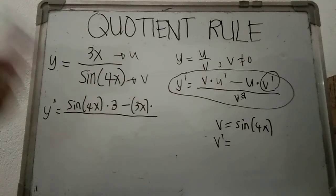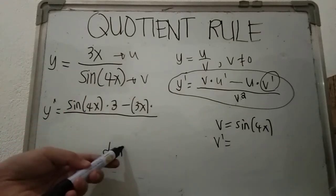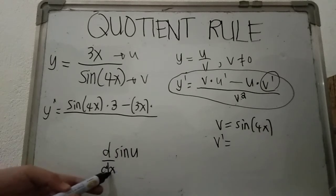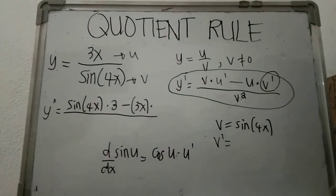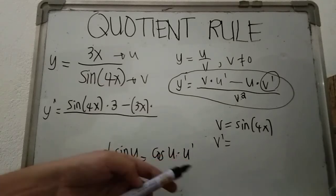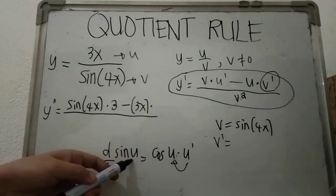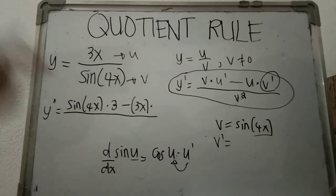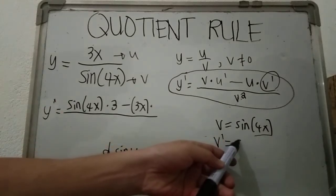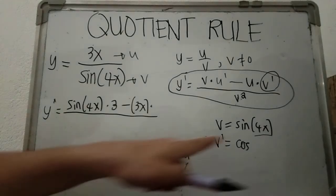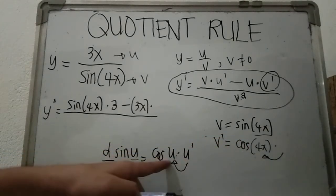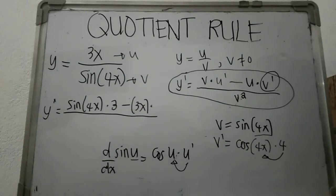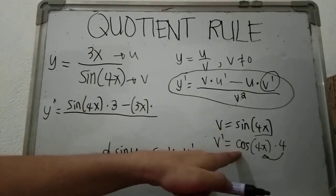The derivative of sine u with respect to x is given by the formula: cosine u times u prime. So if you have the derivative of sine u, all you have to do is copy cosine, copy the function u, then multiply by the derivative of u. Here, our u inside sine is 4x, so the derivative of sine 4x is cosine 4x times the derivative of 4x, which is 4.